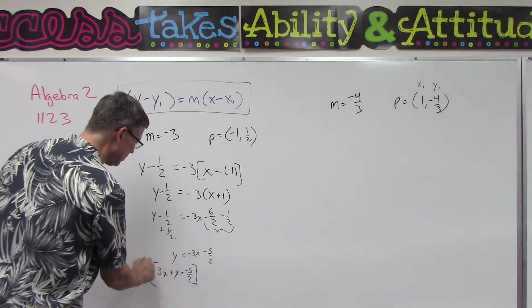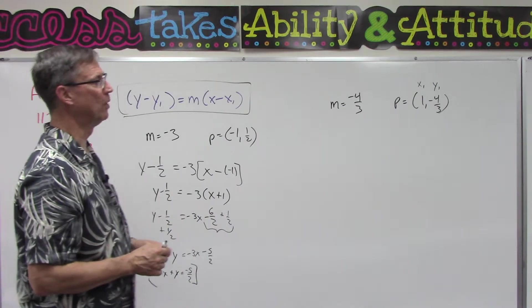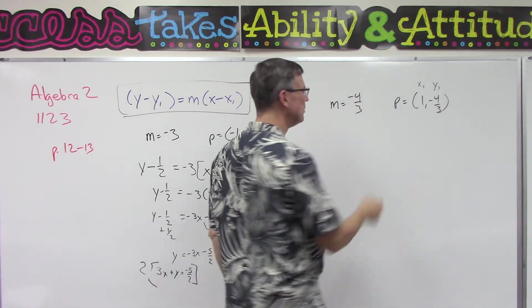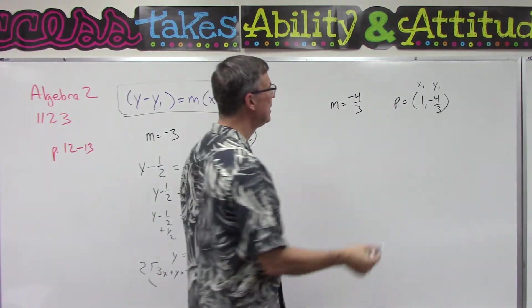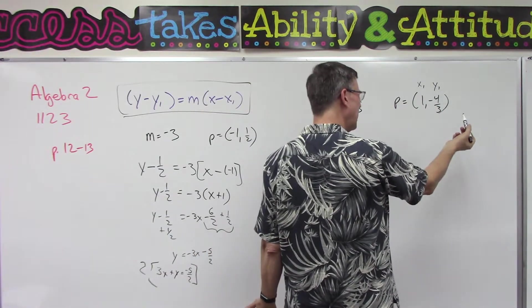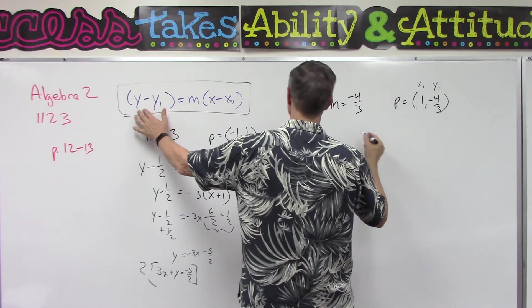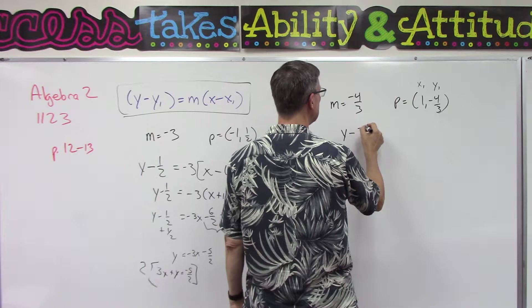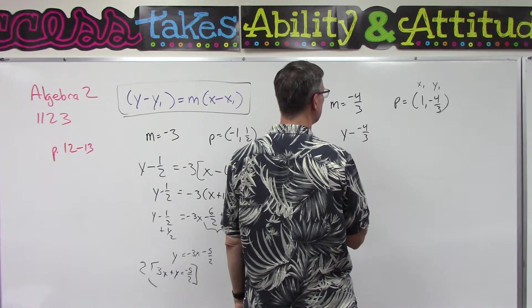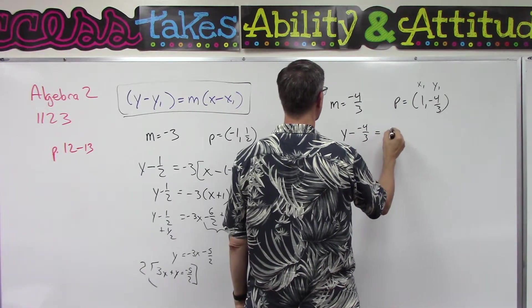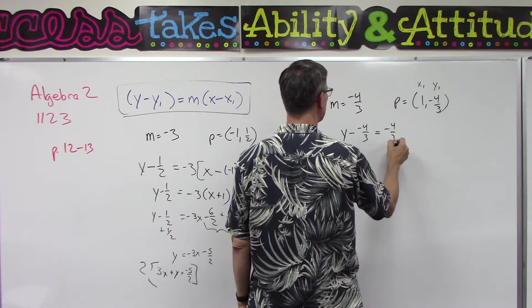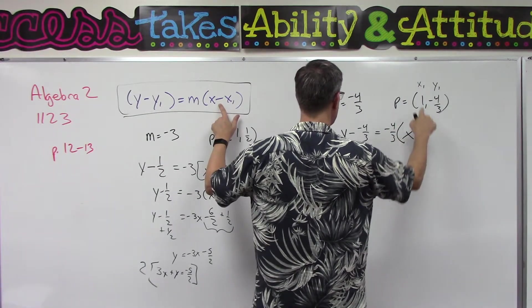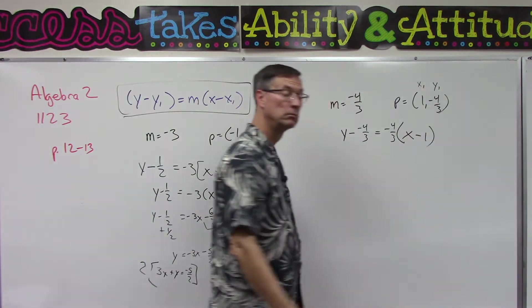Let's just set this one up again. We have a fraction for the m and we have a fraction over here for y. Let's take our equation: y minus y1, which is negative 4/3, equals m, which is negative 4/3 parentheses x minus one.